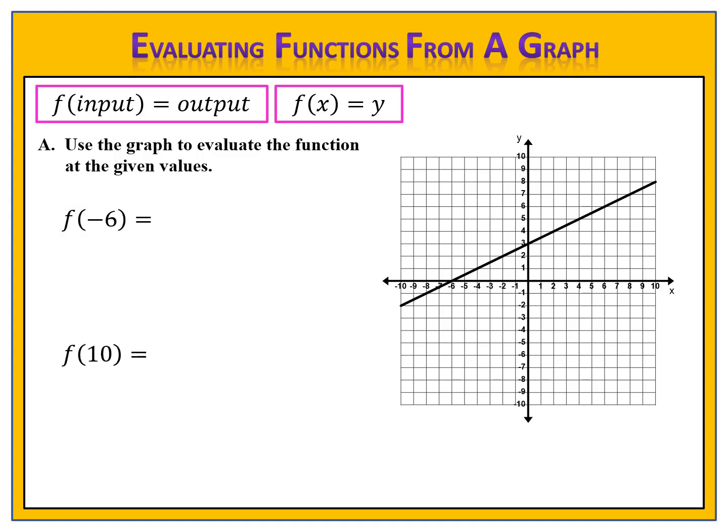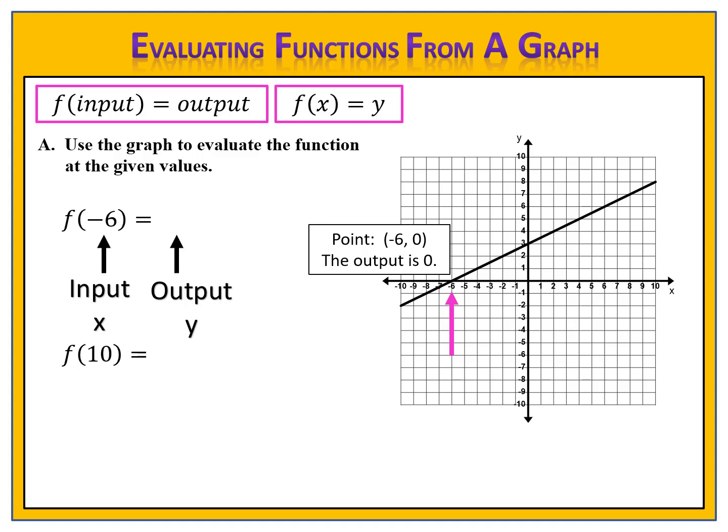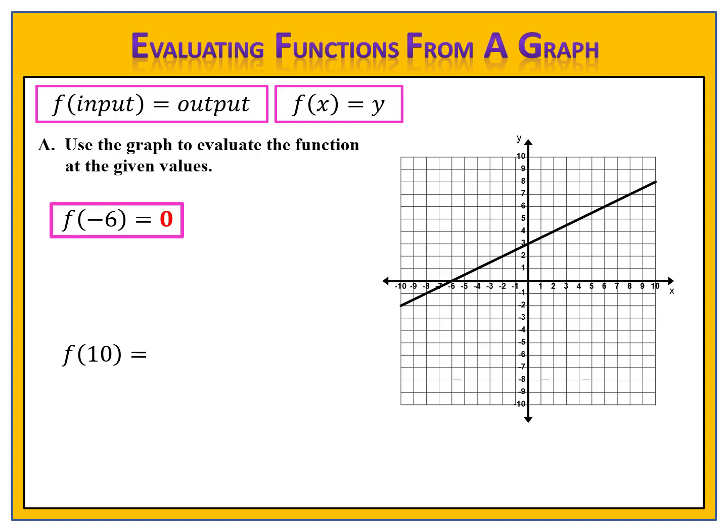Let's try a couple more examples. Use the graph to evaluate f of negative 6 and f of 10 — please pause the video and come back when you're ready to check. For f of negative 6: f of input equals output, so negative 6 is the input. We go on the x-axis to negative 6 and find that the point is (−6, 0). So the output is 0, and f of negative 6 equals 0.